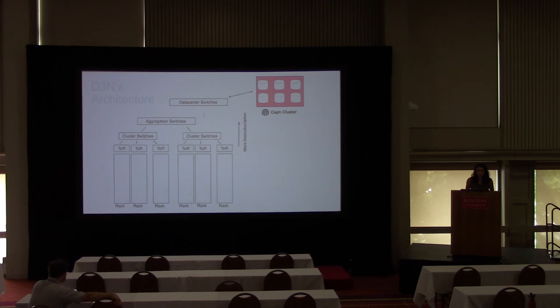I'm going to overview what is the D3N architecture and how does it work. In the figure, you see a Ceph cluster which usually runs on hard disks. We have a hierarchical network topology like a fat tree. We have a bunch of switches, and then racks with top-of-rack switches. In each rack you see compute nodes. This could be bare metal, VMs, or containers.